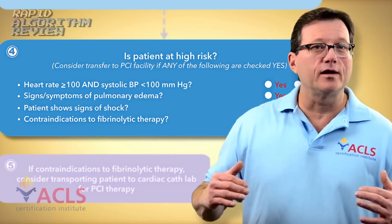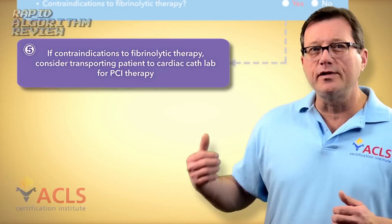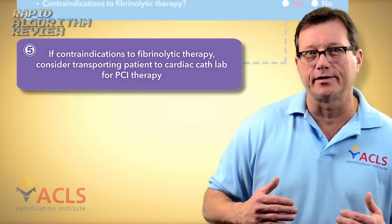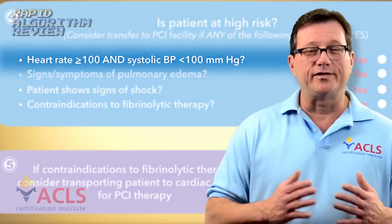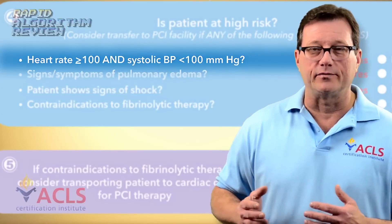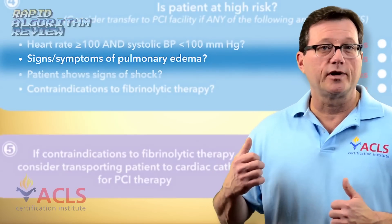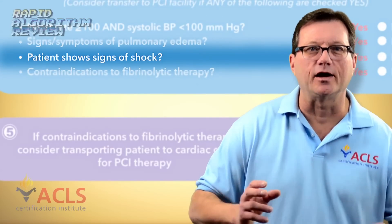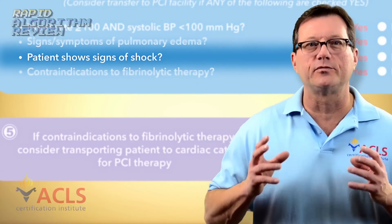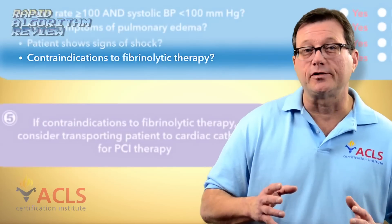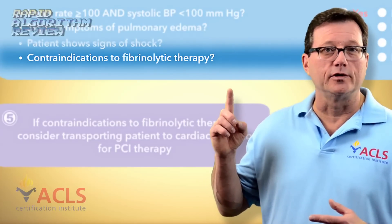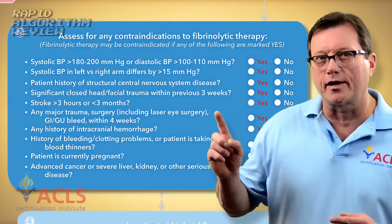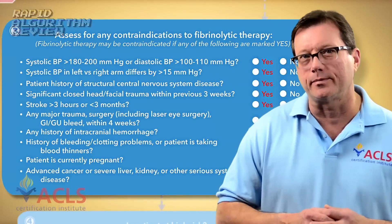Next, let's see if this patient is at high risk. If any of these questions are answered yes, we really want to try to get this patient to a cath lab. First, are they tachycardic and hypotensive? We need to fix that. Does the patient have signs of pulmonary edema? Is this patient shocky — are they showing signs and symptoms of being in a shocked state? Lastly, go back to your contraindication list: did the patient have any of those exclusion criteria checked? Again, they may not be receiving fibrinolytic therapy.